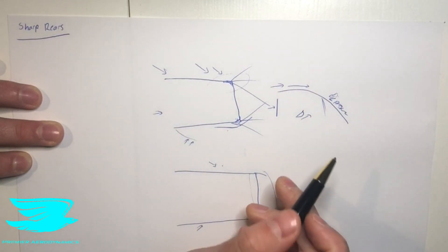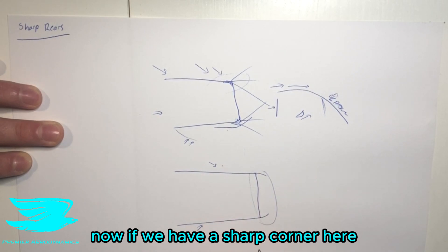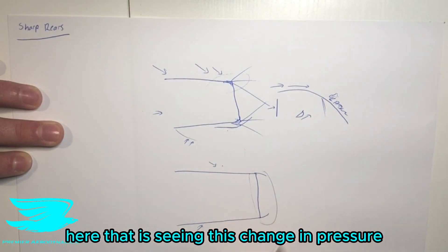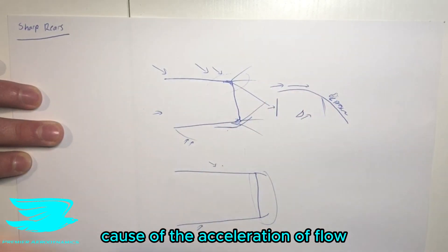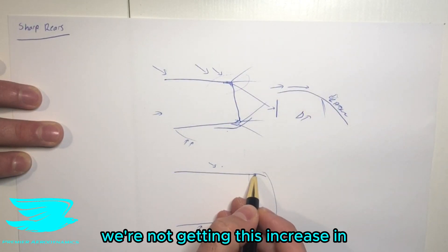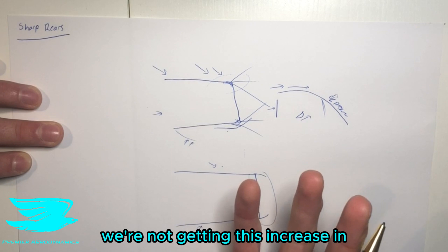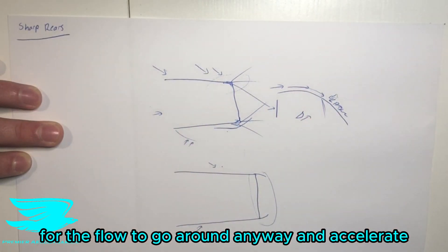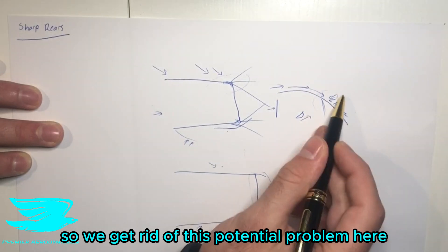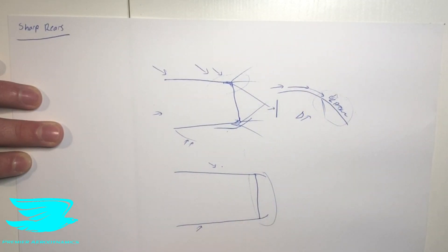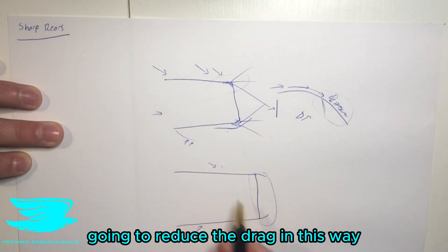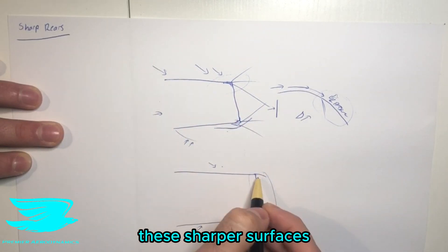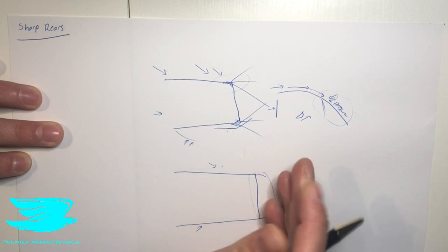Now if we have a sharp corner here, first of all there is no rear surface here that is seeing this change in pressure, this reduction in pressure because of the acceleration of flow. And secondly, we're not getting this increase in velocity anyway because we don't have this curved surface for the flow to go around and accelerate. So we get rid of this potential problem here. So that is potentially going to reduce the drag in this way, mainly the pressure drag.